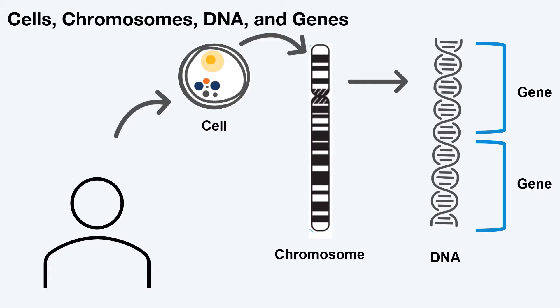Each of us have millions and millions of cells that make up our bodies. We have different types of cells such as skin cells, brain cells, and heart cells that act as our body's building blocks. Our cells contain structures called chromosomes.